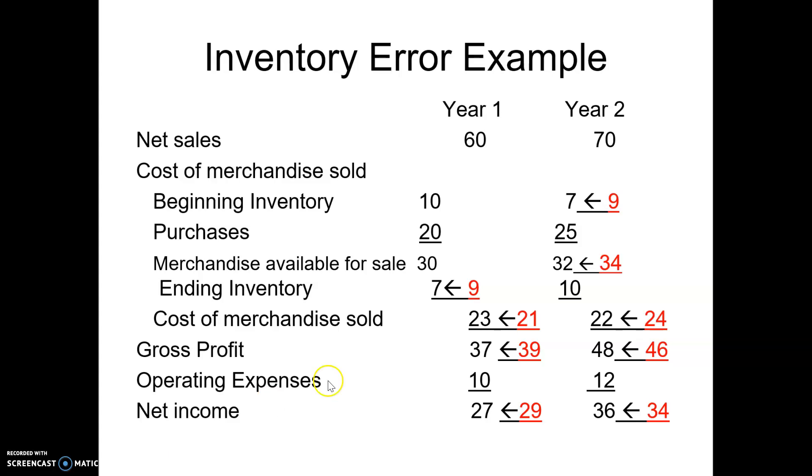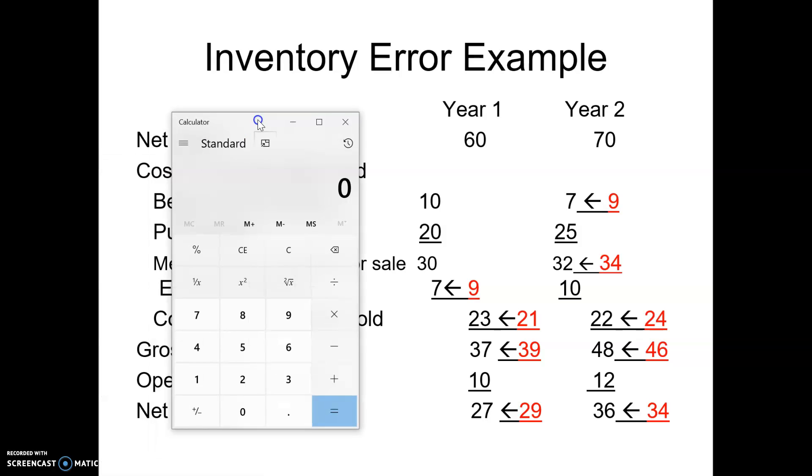So just to finish up, since I got caught off in the last video, we can see between Year 1 and Year 2, 27 was our net income in Year 1, plus 36 in Year 2 was what we reported, 63.